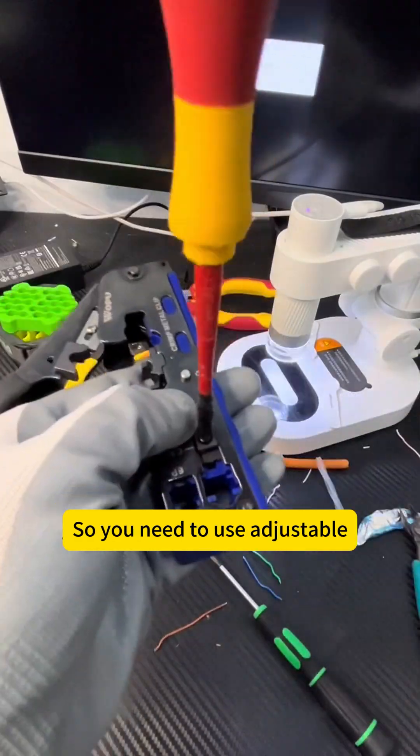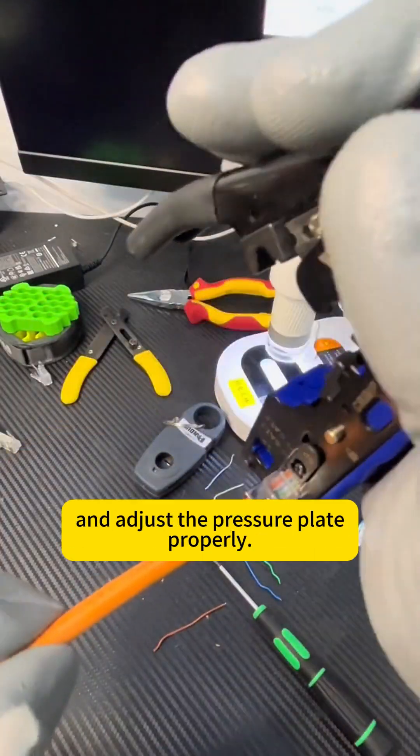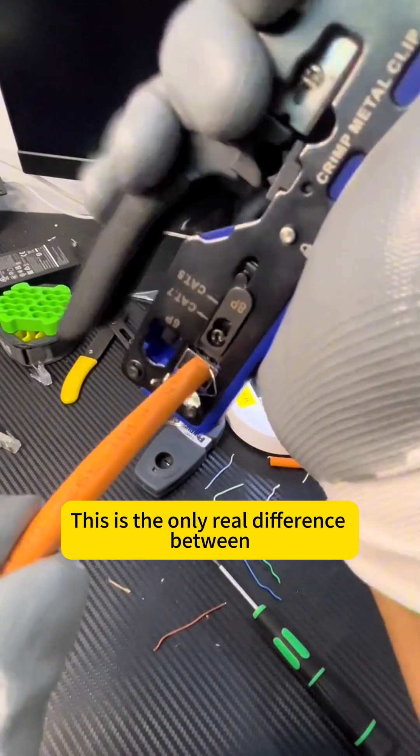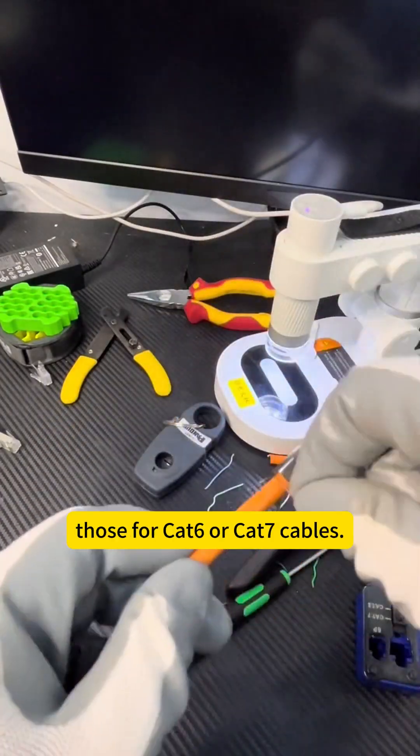So, you need to use adjustable, multifunction crimping pliers and adjust the pressure plate properly. This is the only real difference between crimpers for CAT5 cables and those for CAT6 or CAT7 cables.